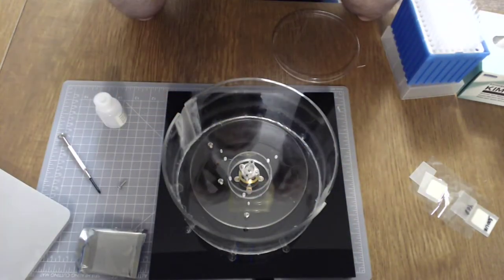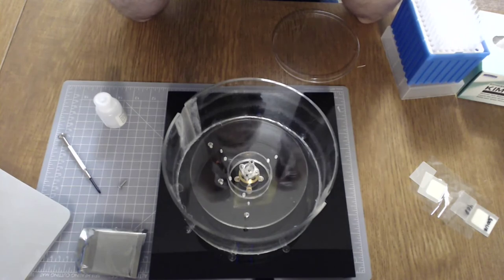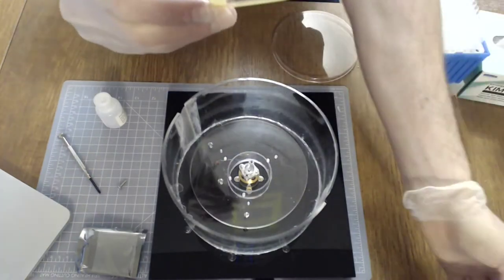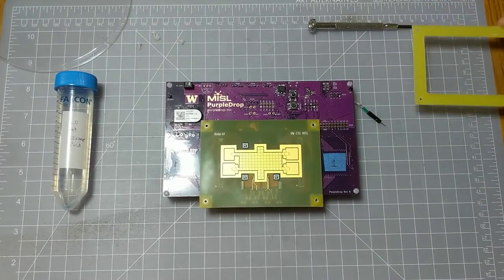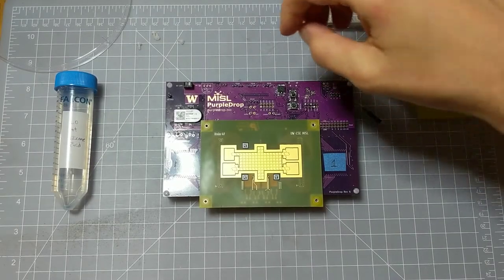After spin coating it goes into the oven to bake for about 30 minutes at 120C.